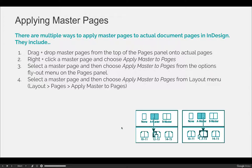You can also right-click a master page in that top area of your pages panel and choose to apply master to pages. Once you do this, you'll be able to say apply to 1-37 and it will apply to pages 1-37, or you can put 1, 7, 11, 26 and list all the pages that you want to apply to.